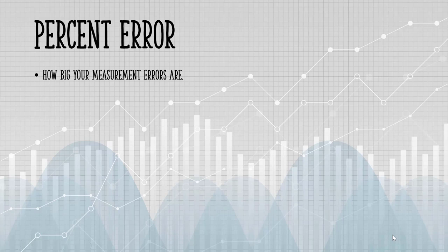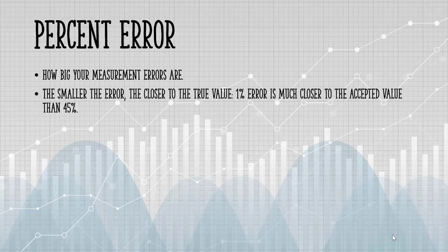Percent error tells you how big your errors are when you measure something in an experiment. Smaller percent errors mean you are close to the accepted or real value.